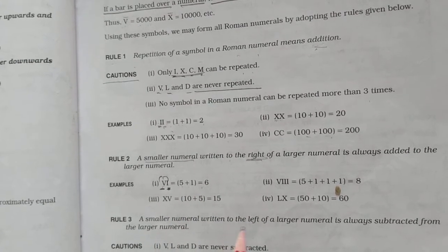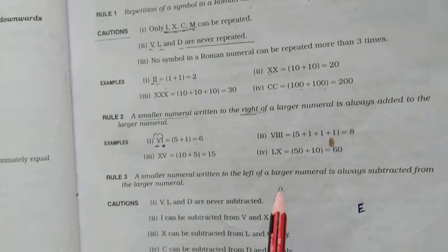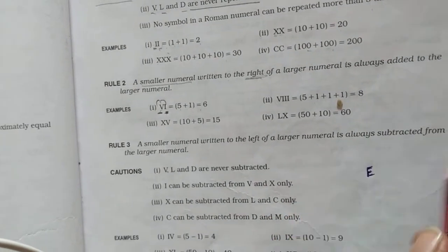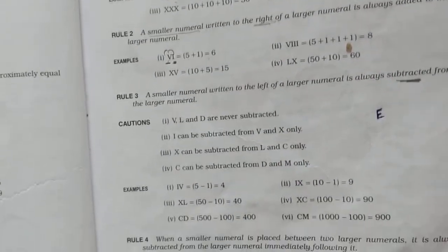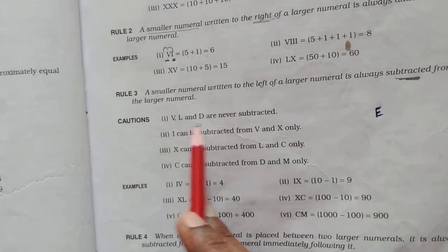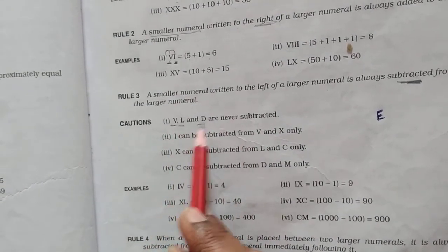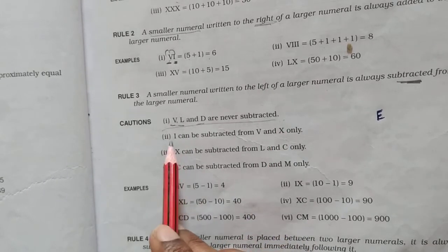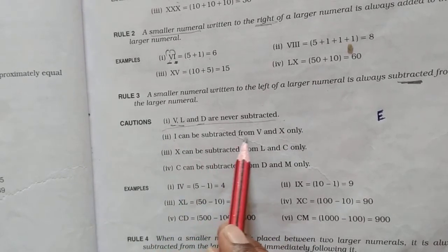A smaller number written to the left of a larger number is subtracted from it. Smaller number left mein likha jata hai larger number ke. V, L, and D are never subtracted.